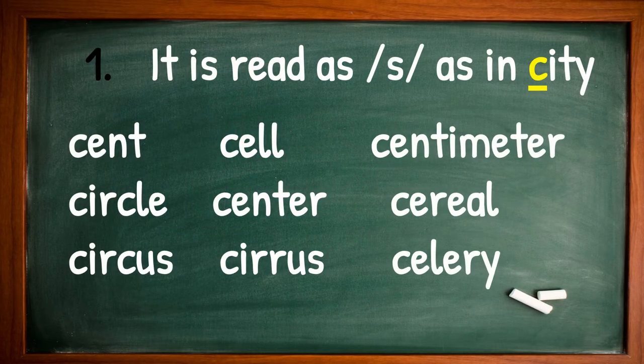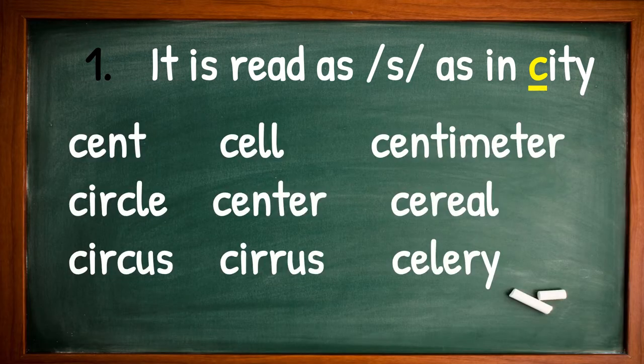The second sound is read as C as in city. Cell, circle, circus, center, centimeters, cereal, and celery.